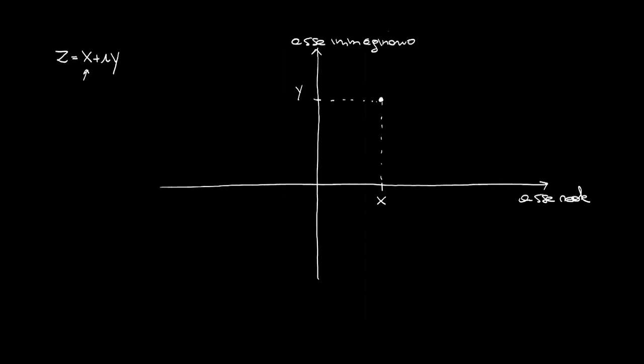There is another representation of complex numbers, not in Cartesian but in polar coordinates, which involves the radius vector — the segment connecting the origin of the reference system to point P with coordinates (x, y). To define a complex number in polar coordinates we characterize it by the length of this segment, called the modulus or absolute value r, and the angle this vector forms with the real axis, called the argument or anomaly φ of the complex number z.